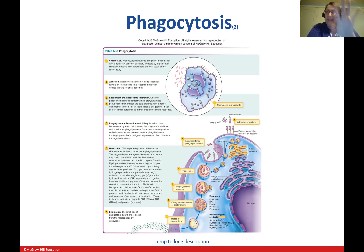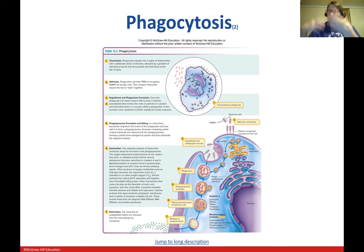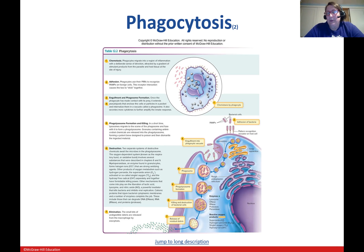The steps of phagocytosis are: chemotaxis (cytokines signal that bacteria are present and call macrophages to clean things up); the white blood cell attaches to the tissue where bacterial infection is; it engulfs the bacteria forming the phagosome and phagolysosome; it kills the bacteria using reactive oxygen species; then elimination occurs where antigens are put up on the outside of the cell or removed as cellular debris.